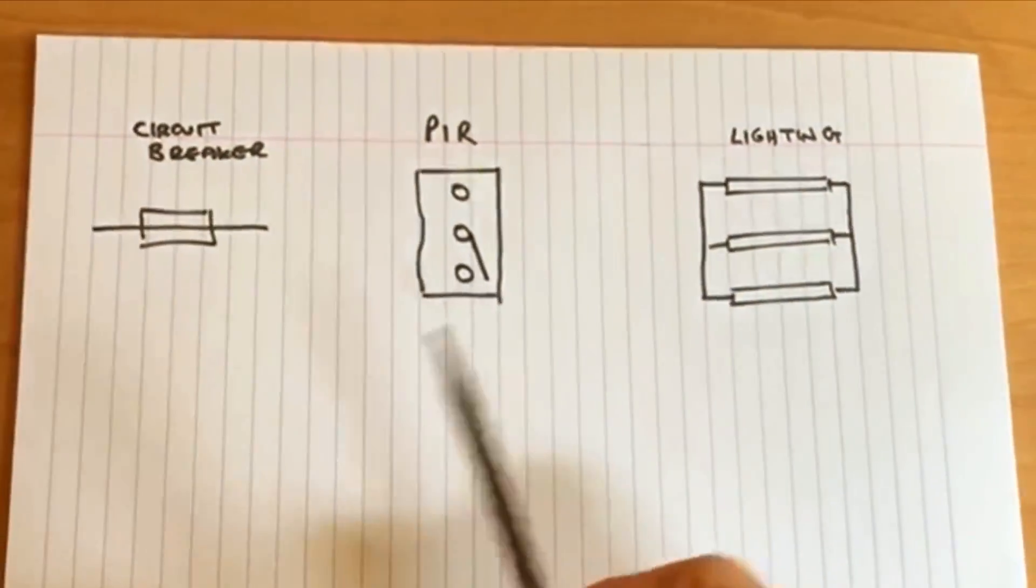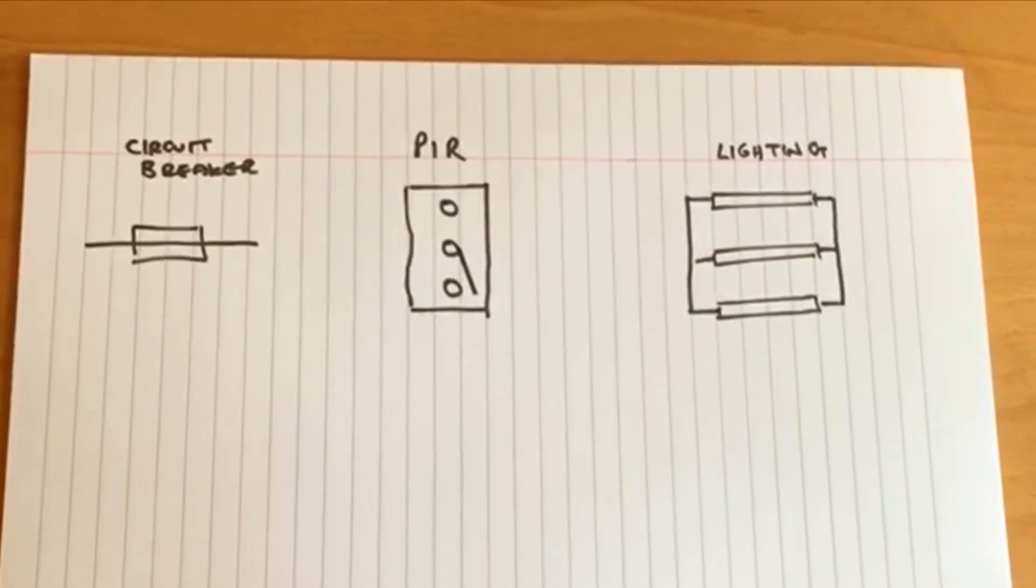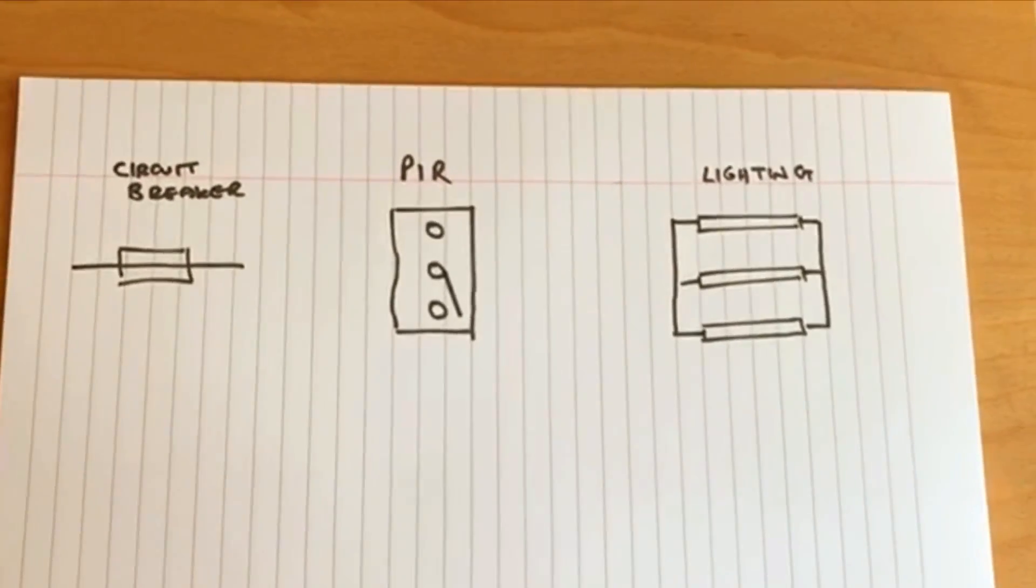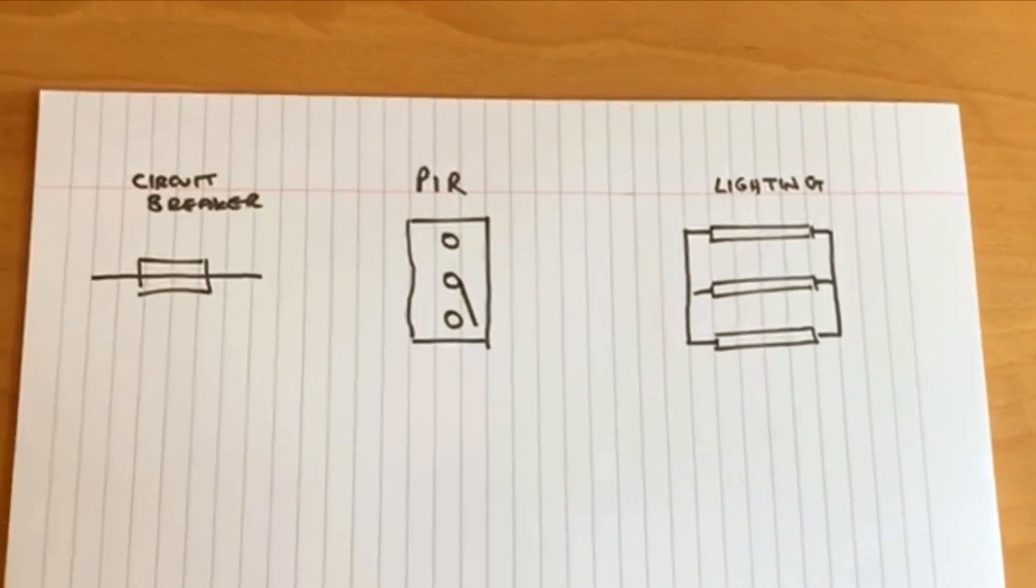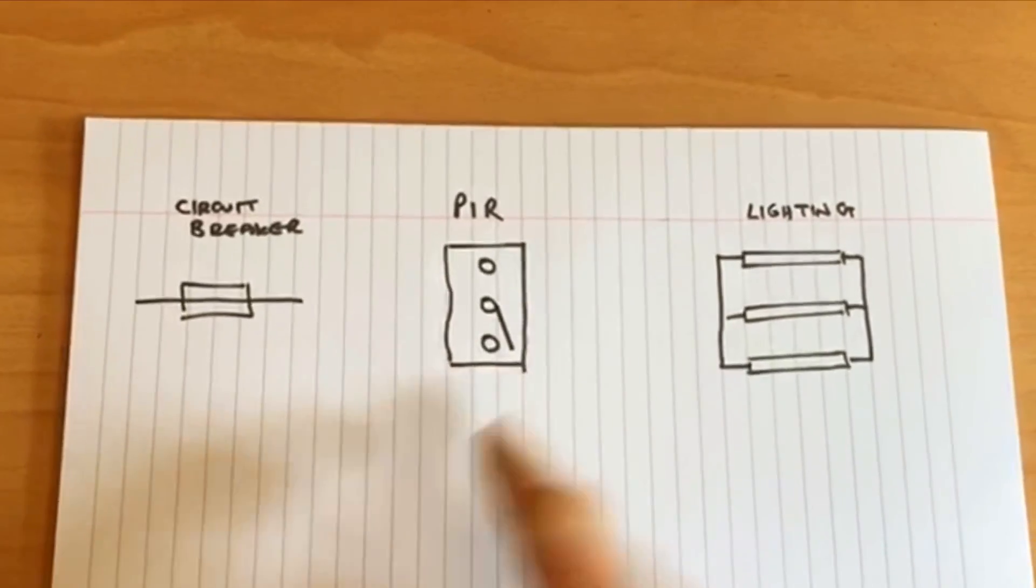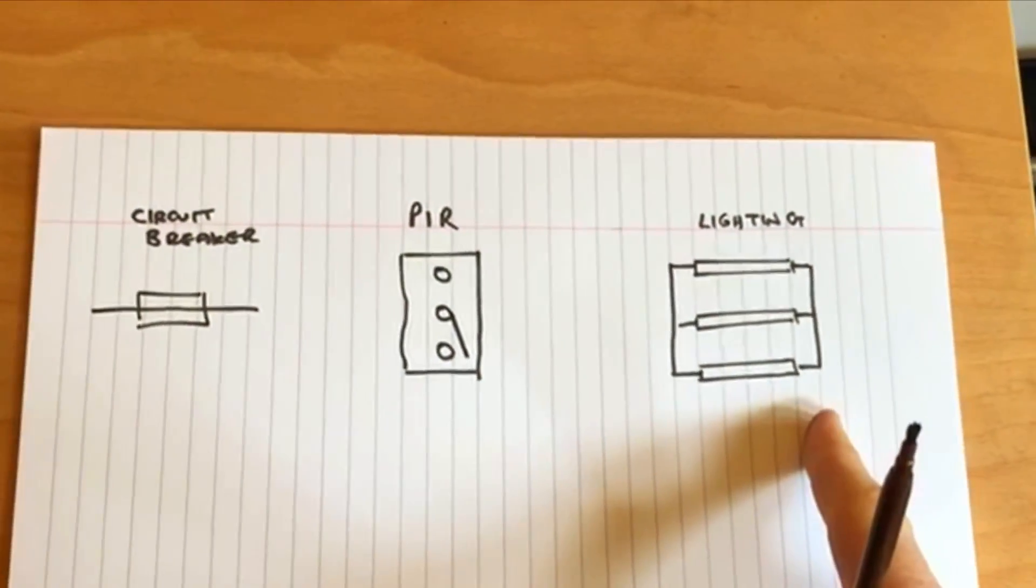And so it's basically just a switch. Rather than having a manual switch that you turn on or off, the PIR does the switching for you. We have a circuit breaker or a fuse, the PIR, and the actual lights here.